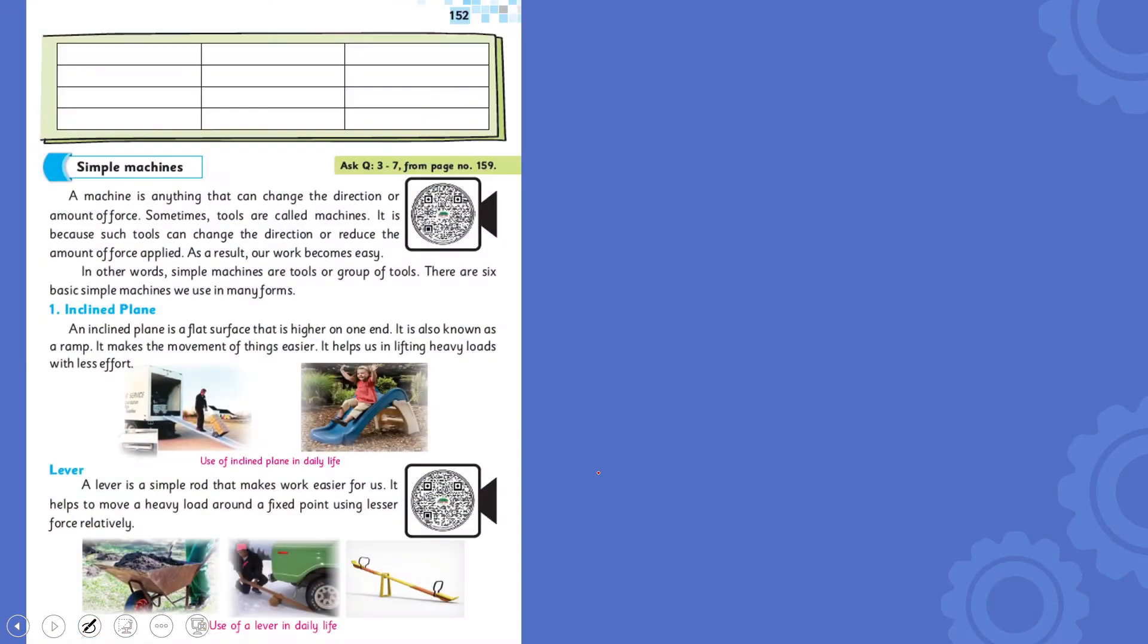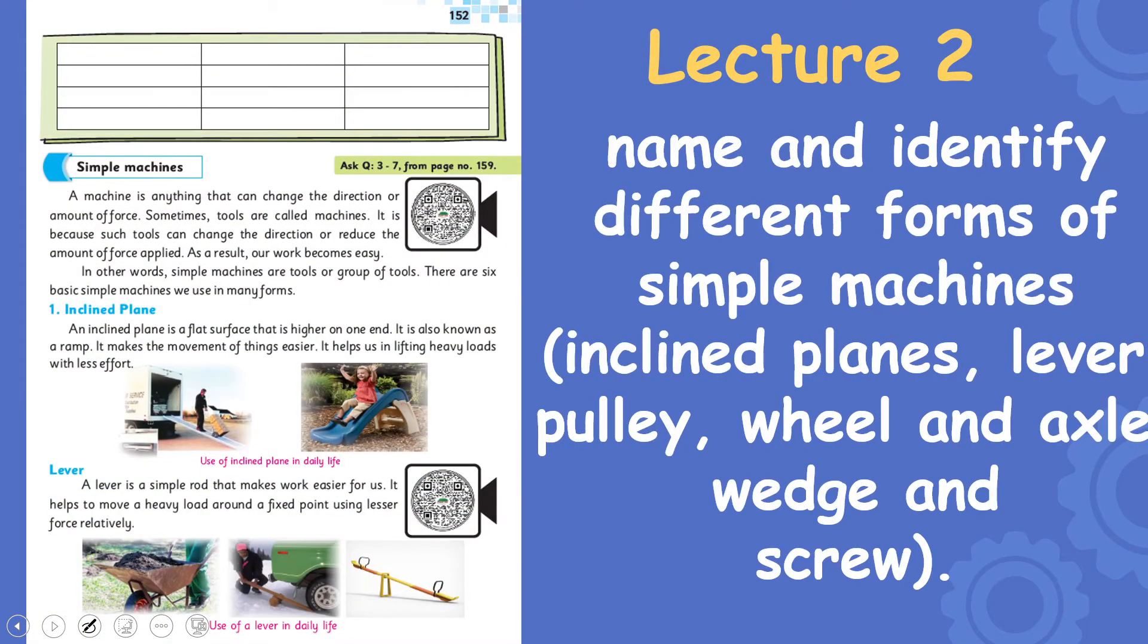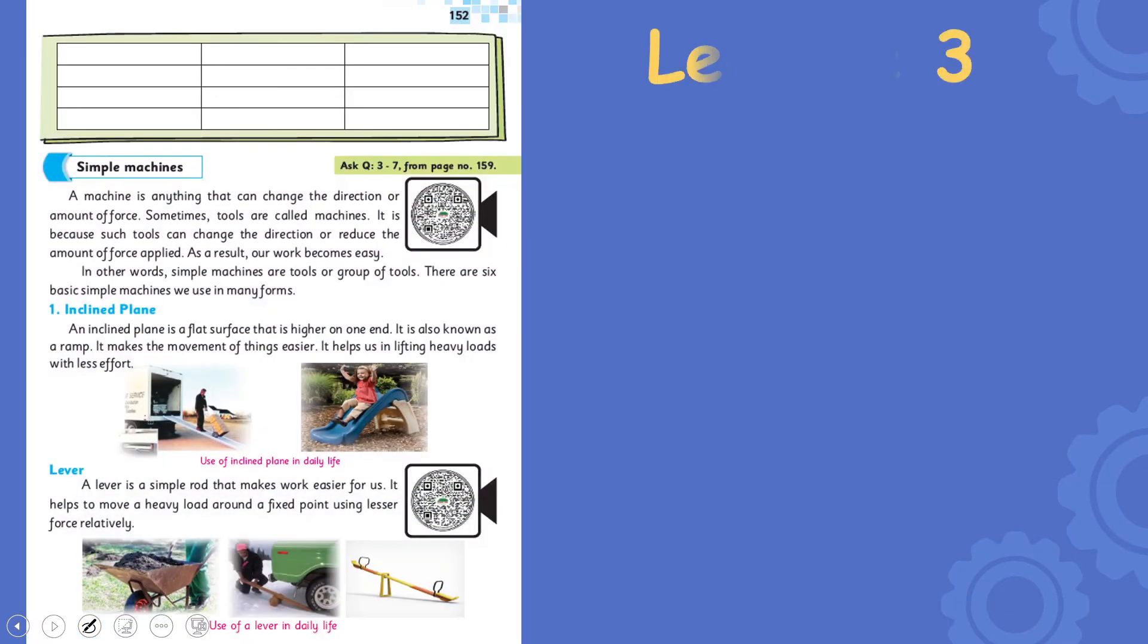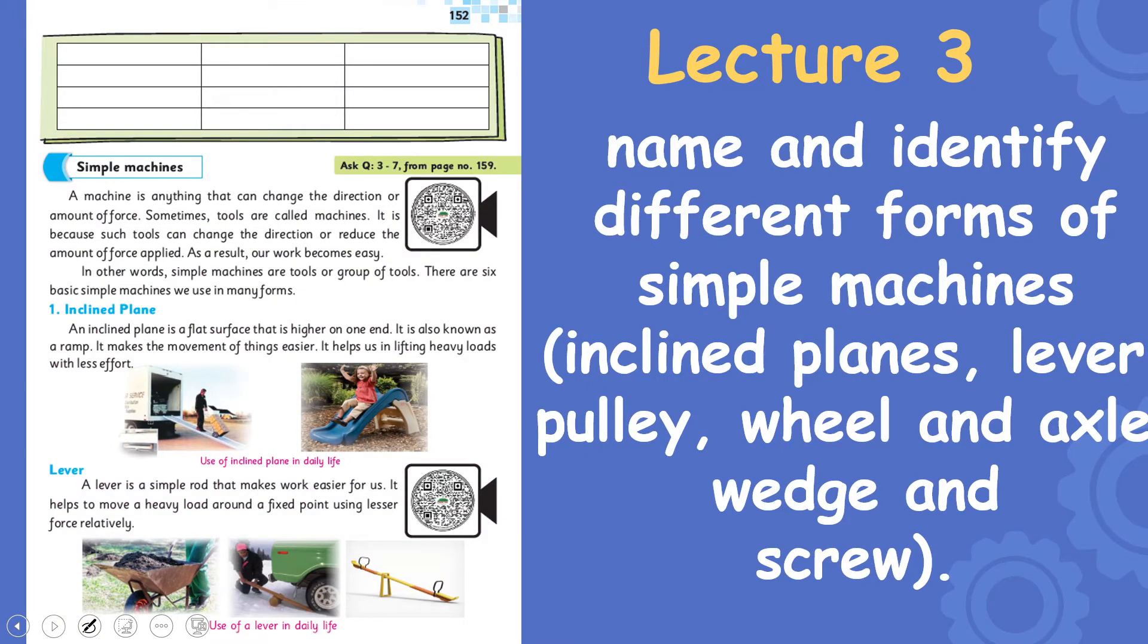In lecture number one and lecture number two, the students will be able to name and identify different forms of simple machines: that is inclined plane, lever, pulley, wheel and axle, wedge, and screw. So my dear students, we will discuss inclined plane and lever in lecture number two. And in lecture number three, the students will be able to discuss...